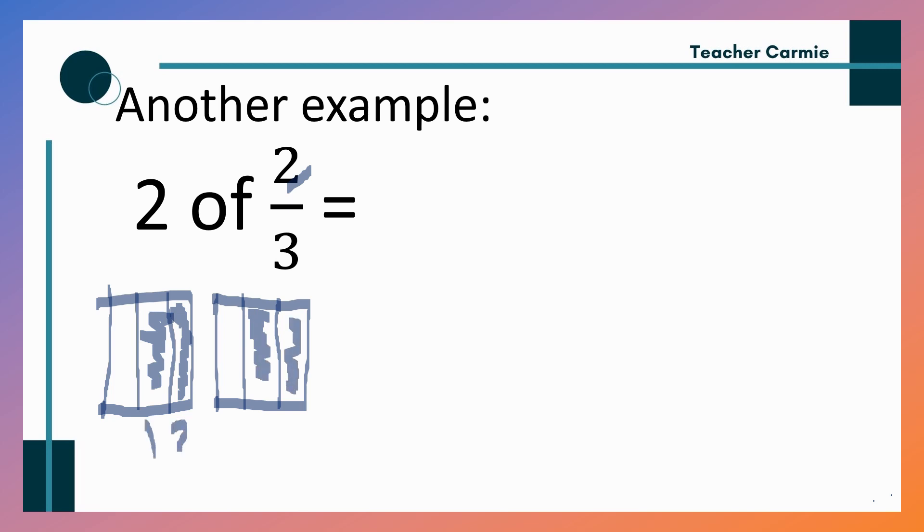1, 2. Then we will count how many are the shaded parts. 1, 2, 3, 4. So meaning your numerator will become 4, then 3. Why 3 from the division of every figure or numbers? So 4 third is an improper fraction. So improper fraction, first we need to change it into mix. How? So we will divide. 4 divided by 3 equals 1. 1 times 3 equals 3. 4 minus 3 equals 1. So your quotient will become your whole number,